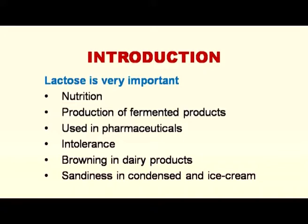Sandiness in condensed milk and ice cream is also because of lactose. Because of the availability of less water in these two products, lactose gets crystallized out. If the crystallization is in the form of very large crystals, then this defect is known as sandiness, because when we consume this product, the crystals are felt on the tongue in the mouth and do not dissolve very quickly. Therefore, a grittiness or sandiness is felt on our tongue, and because of that this defect is known as sandiness.